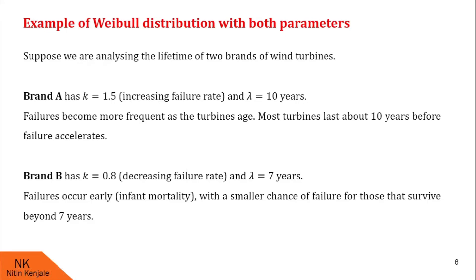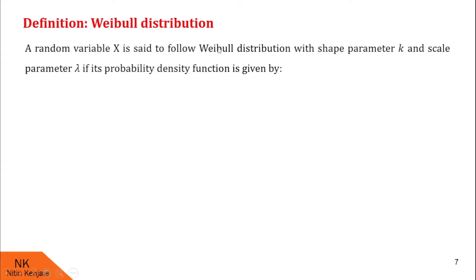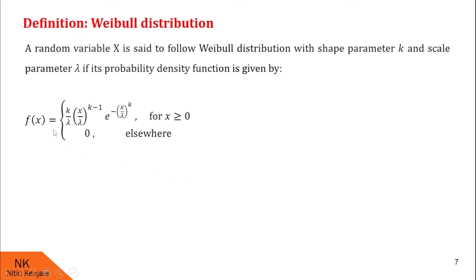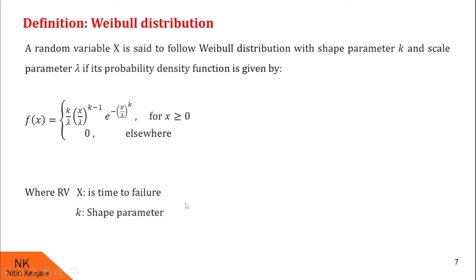Now we define Weibull distribution. A random variable x is said to follow Weibull distribution with shape parameter k and scale parameter lambda if its probability density function is given by: f(x) = (k / lambda) * (x / lambda)^(k−1) * e^(−(x/lambda)^k), whenever x is greater than or equal to 0, and f(x) = 0 at any other point. Here x indicates time to failure, k is the shape parameter, and lambda is the scale parameter.